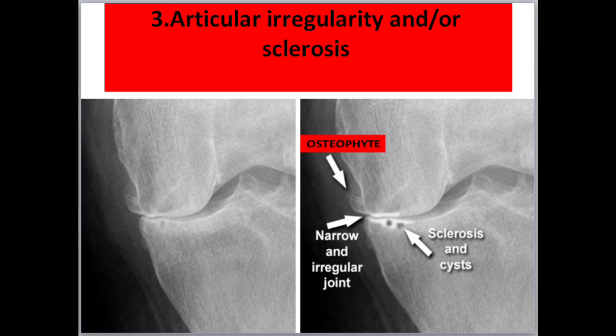Three: articular irregularity and/or sclerosis. This picture shows the joint space is narrowed and the cortical surface is irregular. Increased density of the articular surface indicates sclerosis, and small subcortical cysts have also formed.